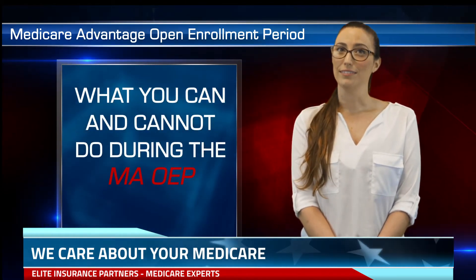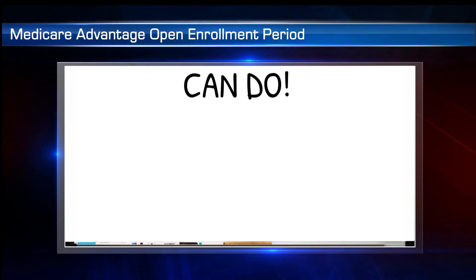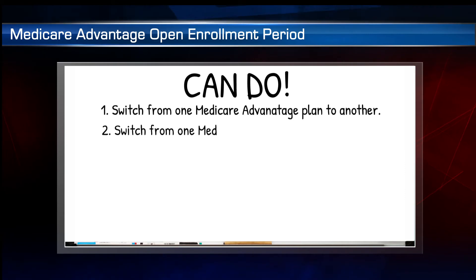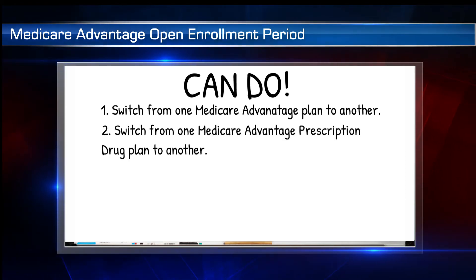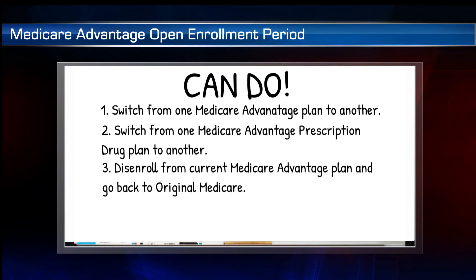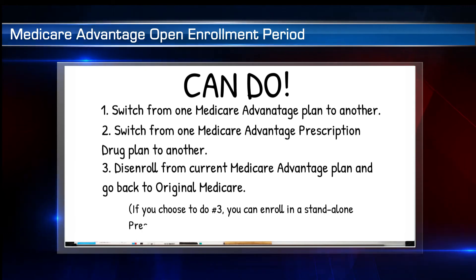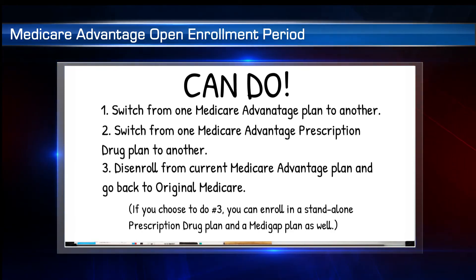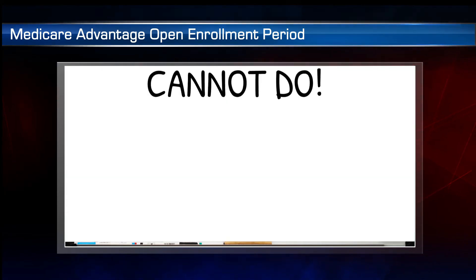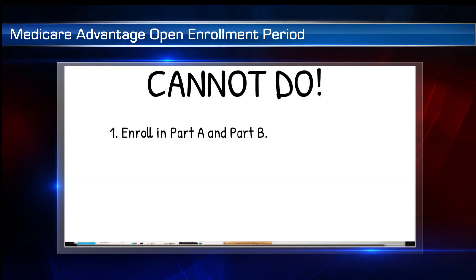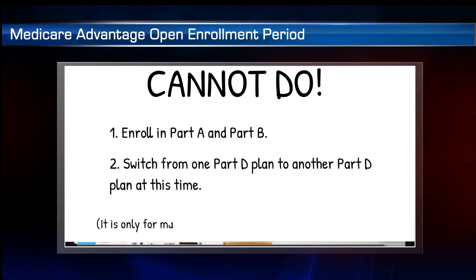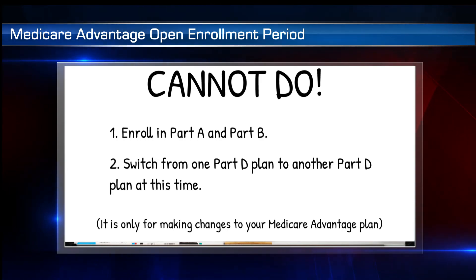Now let's go over what you can and cannot do. You can switch from one Medicare Advantage plan to another. You can switch from one Medicare Advantage prescription drug plan to another. And you can disenroll from your current Medicare Advantage plan and go back to original Medicare — at which point you can enroll in a standalone prescription drug plan and a Medigap plan. What you cannot do: you cannot enroll in Part A and Part B, and you cannot switch from one Part D plan to another Part D plan at this time. It is only for making changes to your Medicare Advantage plan.